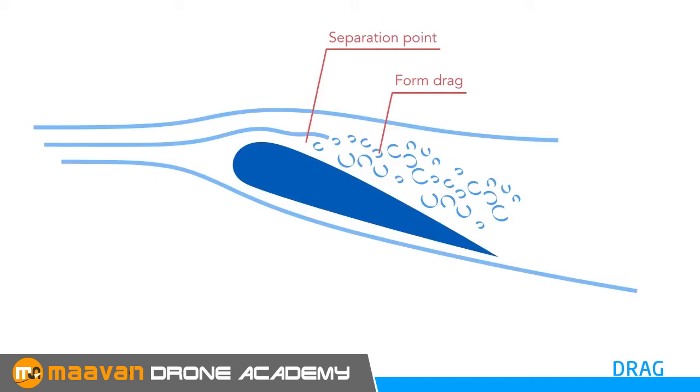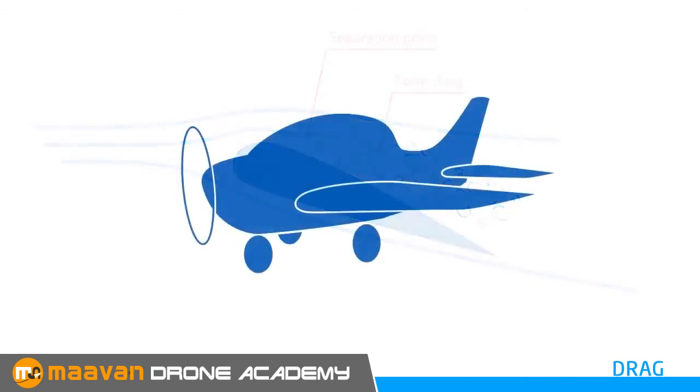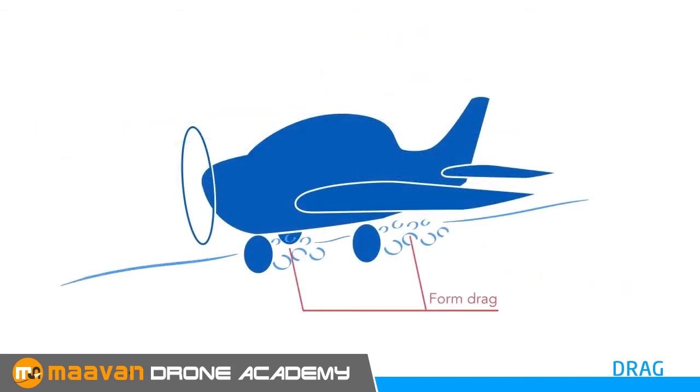Form drag is caused by disturbed airflow that's separated from the surface and spawned into turbulent wake. The more streamlined an object is, the less form drag it creates. So any obstruction to smooth airflow, such as dangling wheels, will produce form drag.